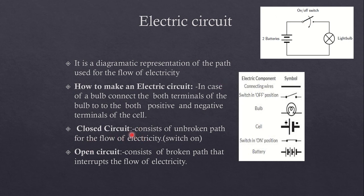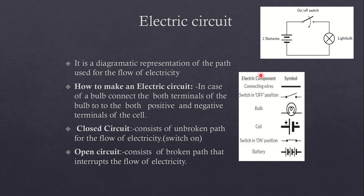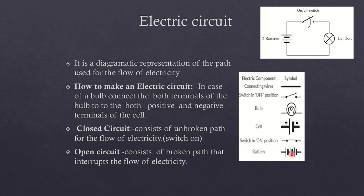Closed circuit consists of an unbroken path. In the closed circuit, the path is not broken — switch is on for the flow of electricity. In the open circuit, the switch is off and there is a broken path that interrupts the flow of electricity. In the electric circuit, some symbols are used to show the path: connecting wires are shown by a thick line; switch in the off position; cell with positive terminal and negative terminal; switch in the on position where both dots are joined; battery is where two or more cells are joined together.